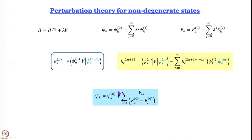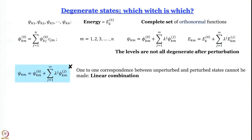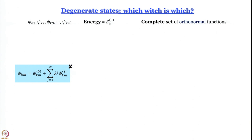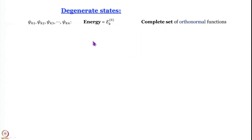We also found an expression for the correction to the wavefunction involving the interaction integral V_ik of the ith and kth terms. Now when we go over to the degenerate states, we encounter an interesting situation: for the kth level associated with energy E_k^(0), we do not have one wavefunction — we have n number of wavefunctions, which we designate psi_k1, psi_k2, psi_k3, psi_kn, and so on.